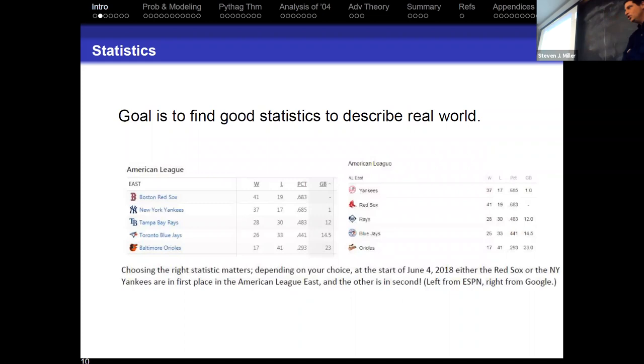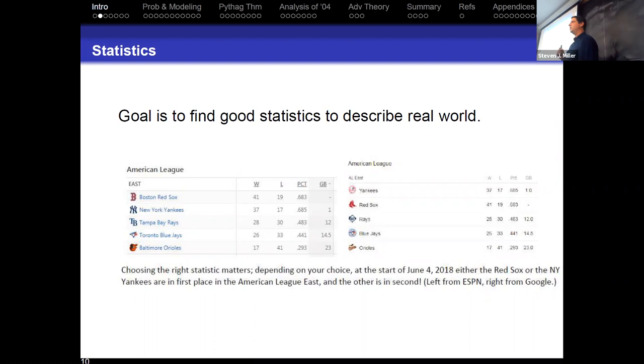So I want to talk about finding the right statistics. This is sadly data from June 4th, 2018. Depending on which webpage you go to, there's a different team in first place in the American League East. They have the same number of games played, they have the same outcomes, when one has the Red Sox at first, the other has the Yankees. Now clearly the one on the left, which has the Red Sox at first, is correct. But it comes down to, are you looking at winning percentage or games back? And depending on how you calculate things, because the two teams haven't played the same number of games. So what this tells you is that some of these statistics that are being used may not be the best statistic.